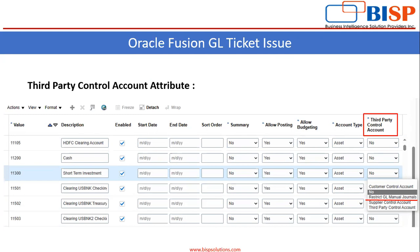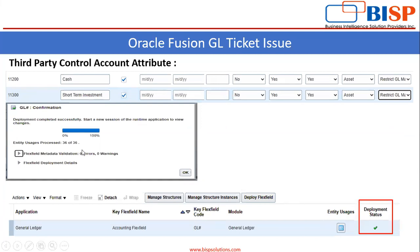If you want to create the journal for this value, you have to do it through the FBDI file. This is the Third Party Control Account attribute, and here I have applied restriction on two values: 11300 for short-term investment, and 11200 for cash.